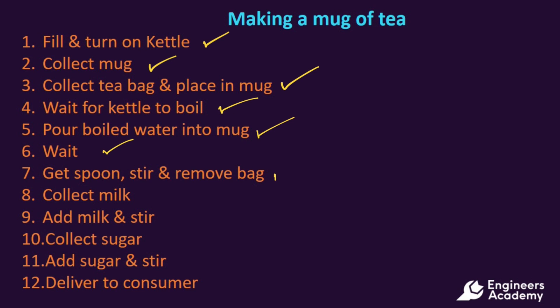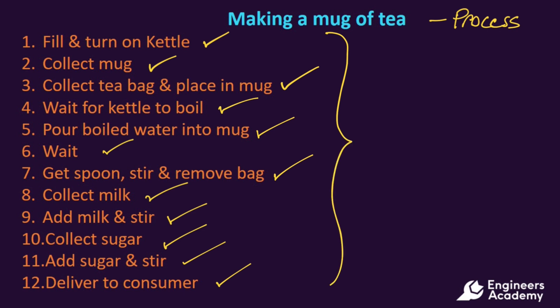We would get a spoon, stir the tea and remove the bag. We could collect some milk, add the milk and stir again. Collect some sugar, add the sugar and stir. Then we have our finished cup of tea that we could deliver to whoever is going to have it. This task of making a mug of tea could be termed as a process, and each of the individual steps could be termed as process steps.